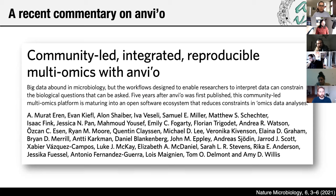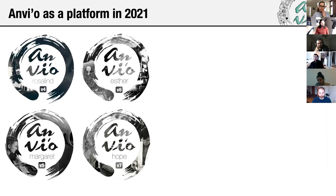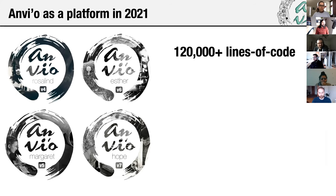Now I'll change gears and talk about where Amvio is today. As of 2021, Amvio is a relatively mature software platform. We're not there yet — we have a lot of things to think about — but there are already multiple stable releases. V7 came out just a few days ago, and Amvio has about 120,000 lines of code.